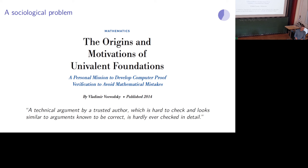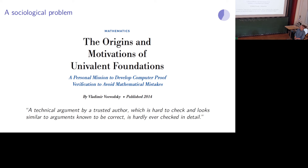This was one of the motivations for Voevodsky to get into foundations, computer proof assistance, and homotopy type theory. He wrote a very interesting essay on what motivated him personally to get into computer proof assistance, where he diagnosed a sociological problem: a technical argument by a trusted author which is hard to check and looks similar to arguments known to be correct is hardly ever checked in detail. He was frustrated at the rigor to which his papers were being peer reviewed.